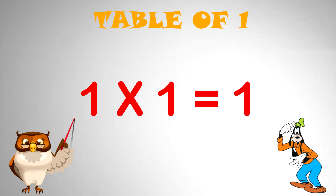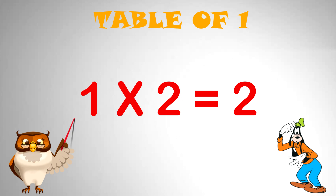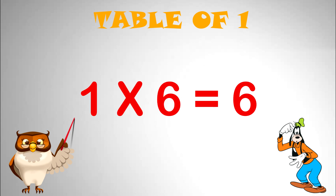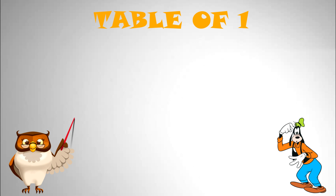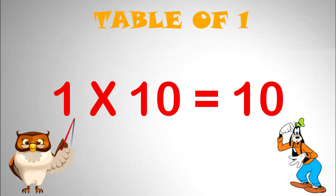1 multiplied by 1 equal to 1. 1 multiplied by 2 equal to 2. 1 multiplied by 3 equal to 3. 1 multiplied by 4 equal to 4. 1 multiplied by 5 equal to 5. 1 x 6 equal to 6. 1 x 7 equal to 7. 1 x 8 equal to 8. 1 x 9 equal to 9. 1 x 10 equal to 10.